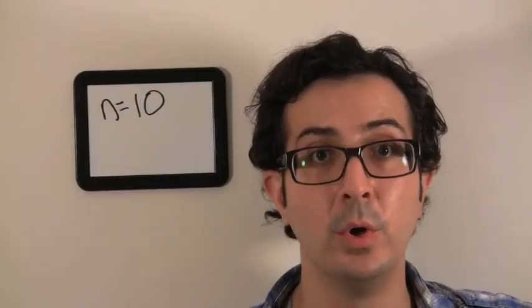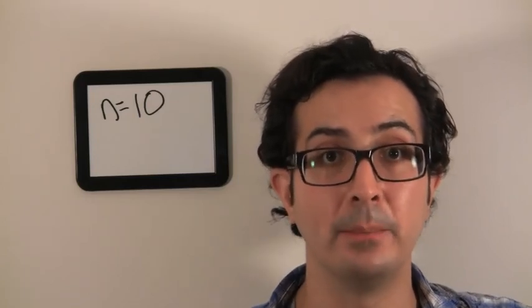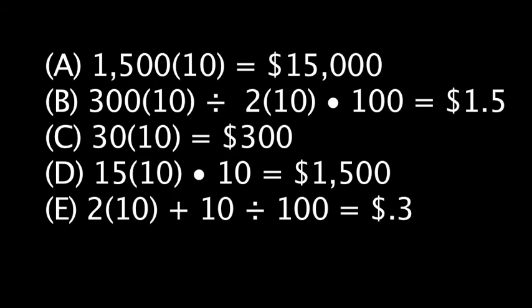That's step two. We've answered the question. Now all we have to do is plug our original number, 10, into each answer choice until we get 300, the answer from step two. And as we see, the answer will be C.